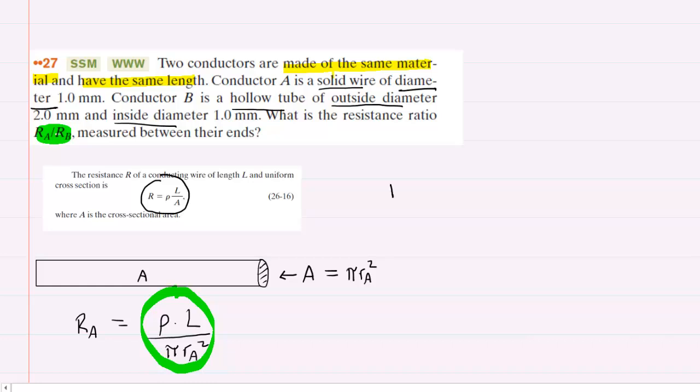So for conductor A, we know that we can take the diameter and divide that by 2. And so we'll take the diameter of 1 millimeter and divide that by 2 and that's going to give us obviously 0.5 millimeters. And then we'll do the same things for the outer radius. We'll take the diameter and divide that by 2. So that was 2 millimeters divided by 2 which will give me 1 millimeter.